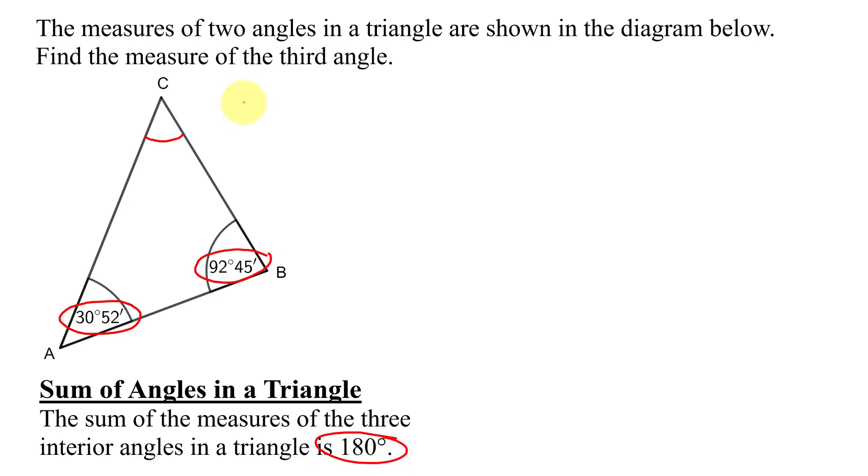If I take angle A and add it to angle B, I'm going to do this in a vertical format. It's easier when the angles are in degrees and minutes. So, I have 30 degrees, 52 minutes plus angle B, which is 92 degrees, 45 minutes.